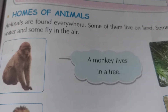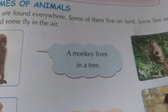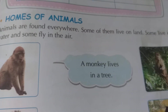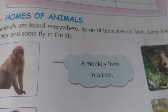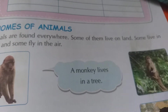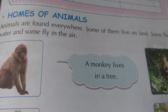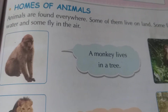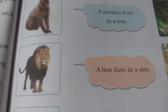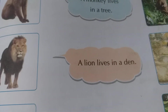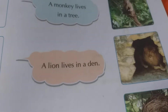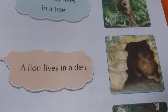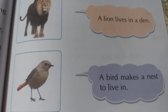In the first picture you can see the monkey. A monkey lives on a tree. Animals are found everywhere — some of them live on land, some live in water, and some fly in the air. A lion lives in a den; you can see the picture here.